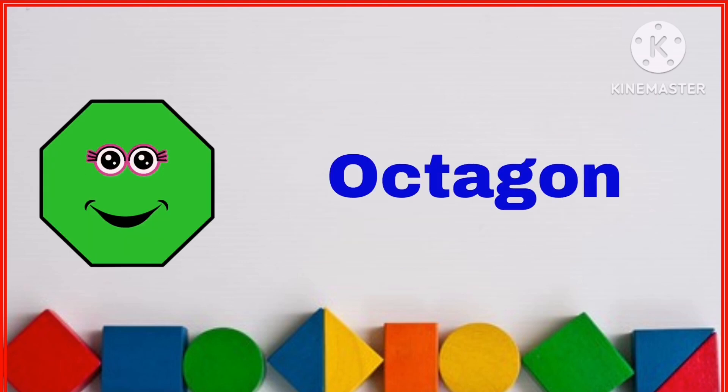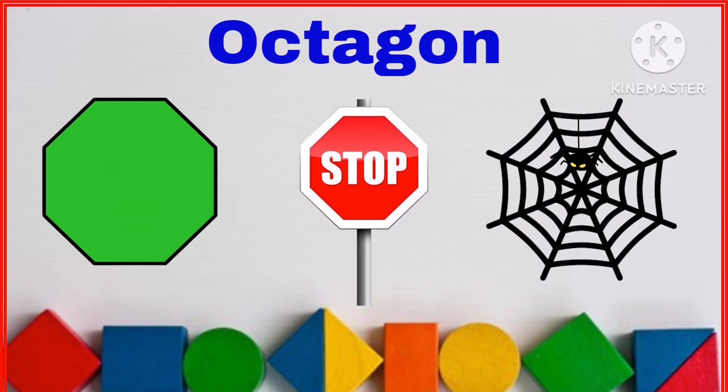I am an octagon. I have eight sides and eight corners. Example: stop sign and spiderweb.